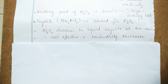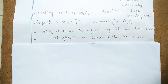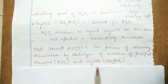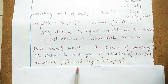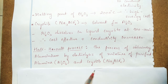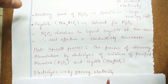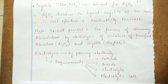So the Hall-Héroult process is now possible. The Hall-Héroult process is a process of obtaining aluminium by the electrolysis of a mixture of purified alumina and cryolite, that is Na₃AlF₆. To carry out electrolysis by passing electric current, certain requirements are there.